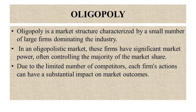Moving on to the concept of oligopoly. The word oligopoly is derived from two Greek words: oligo and polus. Oligo means few and polus means seller. So the name itself suggests its nature — oligopoly is a market structure characterized by a small number of large firms dominating the industry.